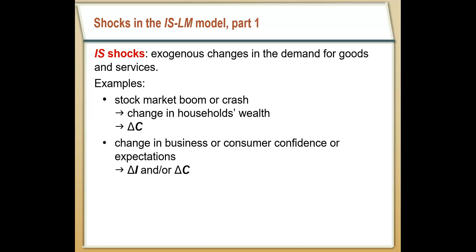In the case of an IS shock, an unexpected change in the IS curve is just going to be an exogenous change in the total demand for goods and services — an exogenous change in the way people want to spend their money. One example would be a sudden crash in the stock market. If stocks are a lot lower than they were previously, it decreases everybody's wealth, and when people have lower wealth, they're going to consume less. So a stock market crash can lower aggregate demand by presenting itself as an IS shock.